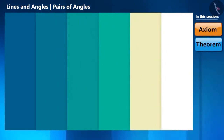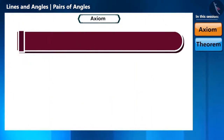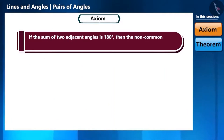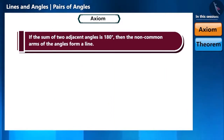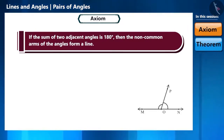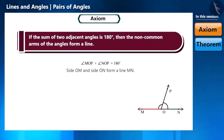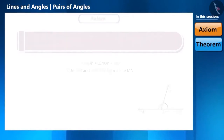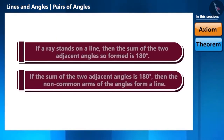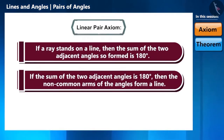Let's move on to the next axiom. If the sum of the two adjacent angles is 180 degrees, then the non-common arms of the angles form a line. That is, if the sum of two adjacent angles is 180 degrees, then the sides which are not the common sides of these angles form a line. Friends, the two axioms that we learned together are called the linear pair axioms.